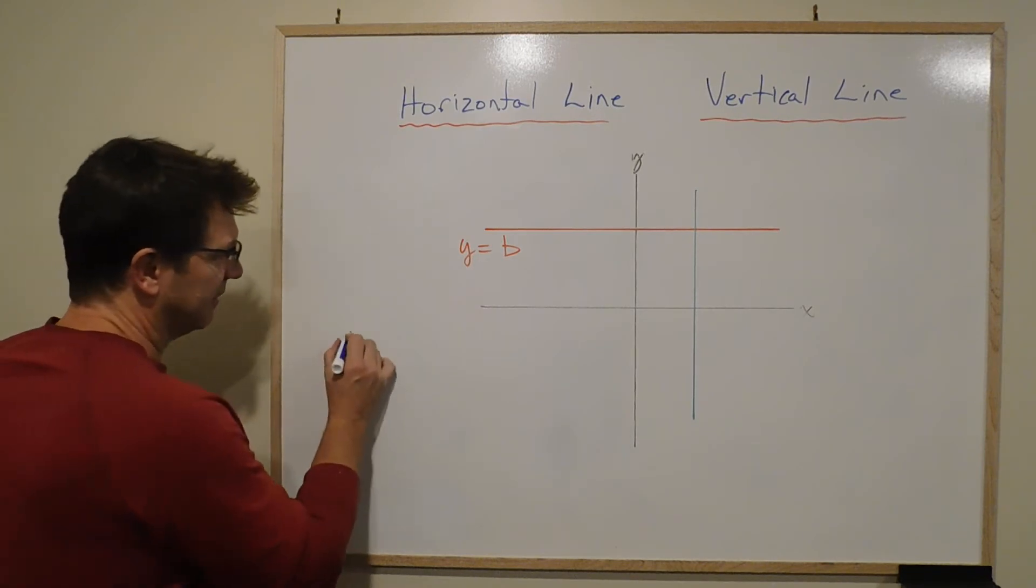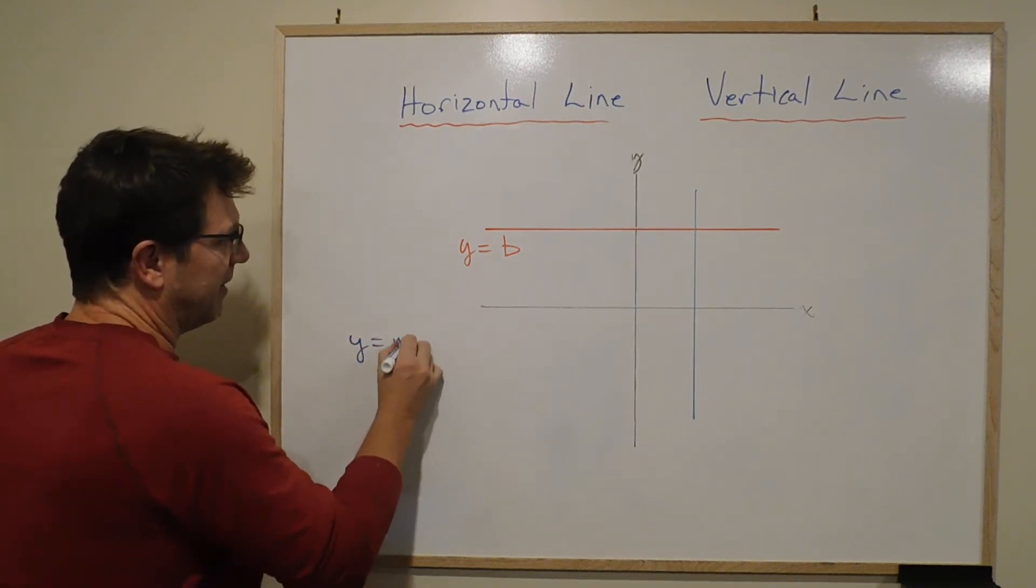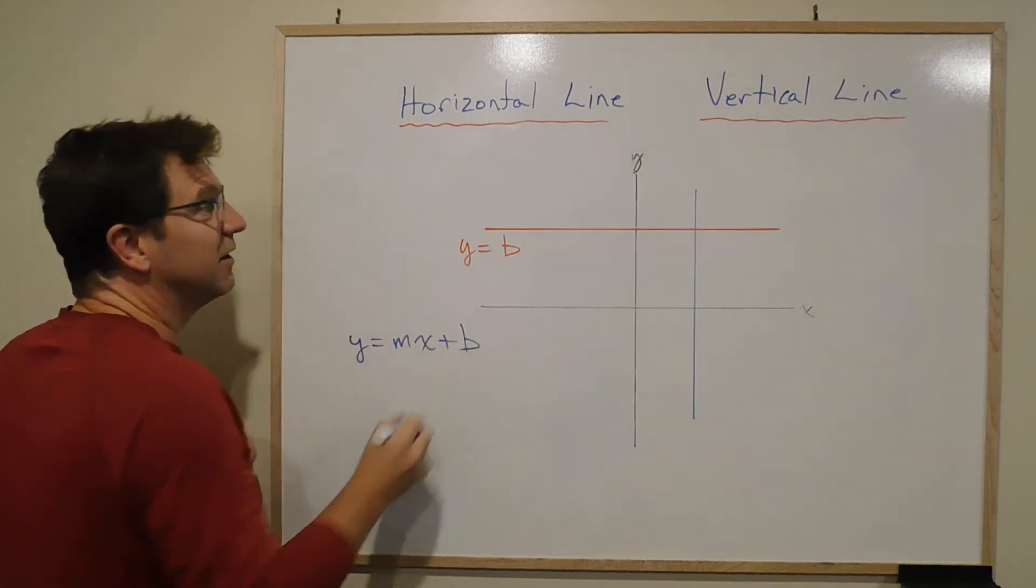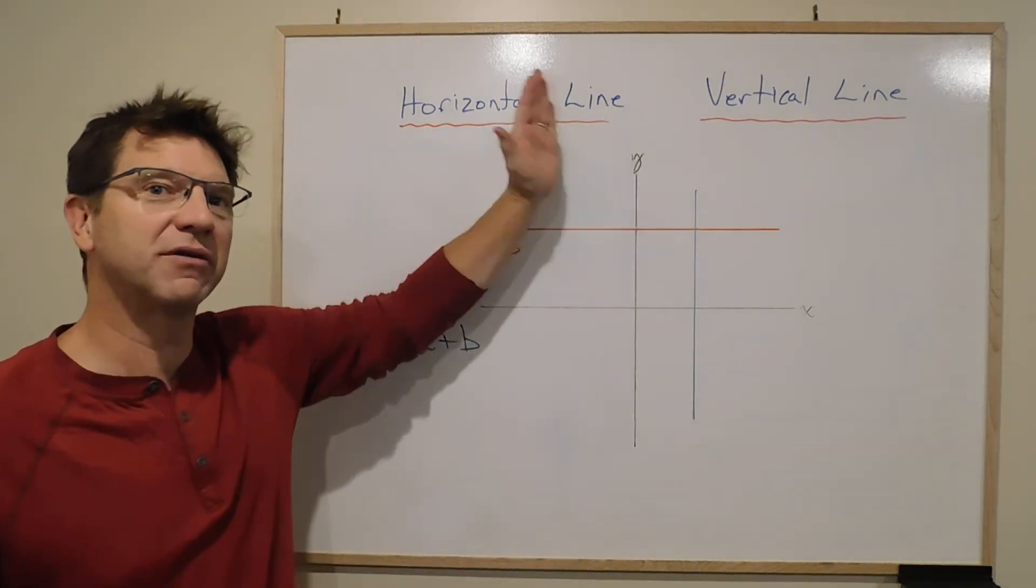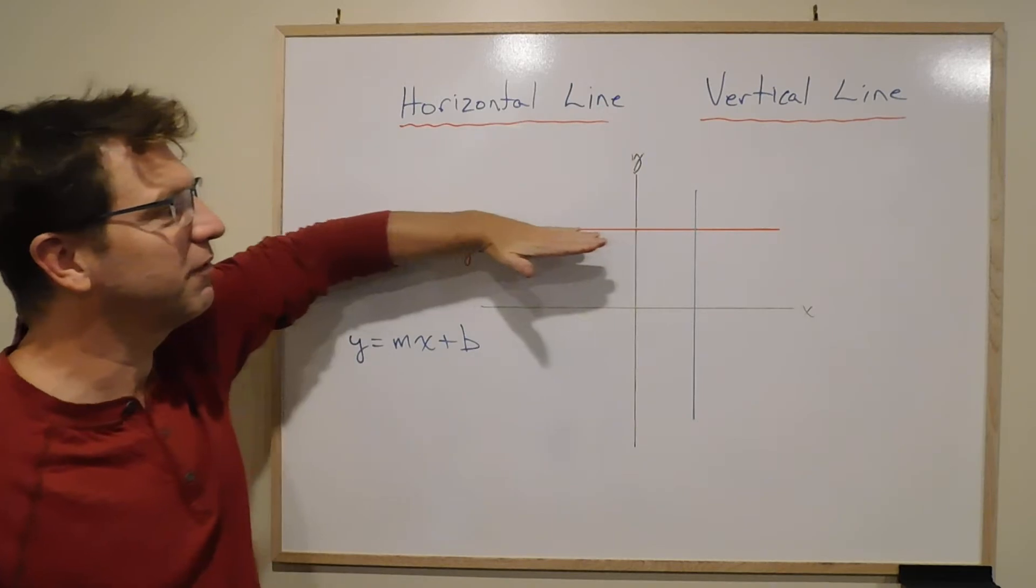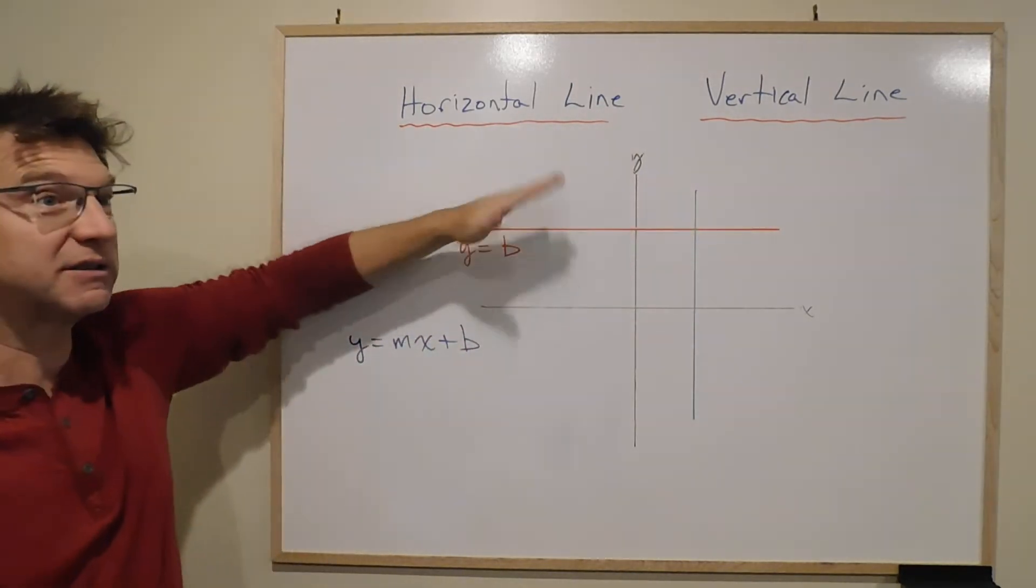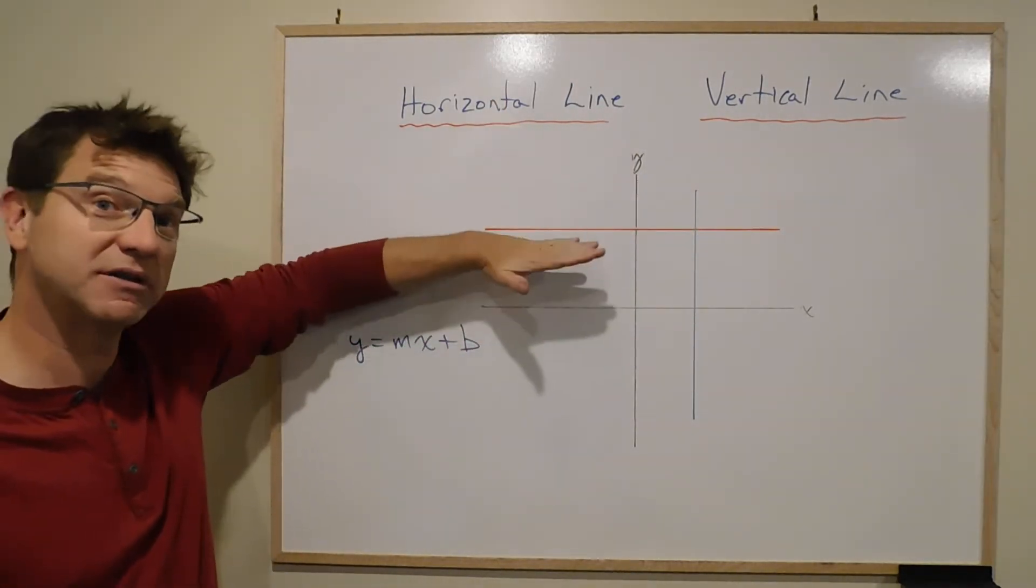In y equals mx plus b, the slope is a measure of steepness. The slope of a horizontal line is 0 because it doesn't go—it's not steep at all, it's flat.